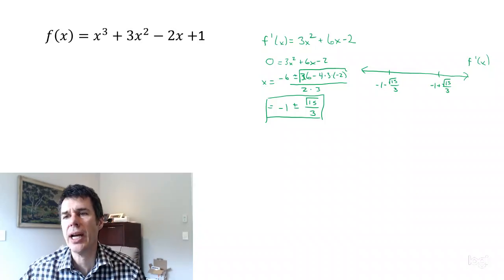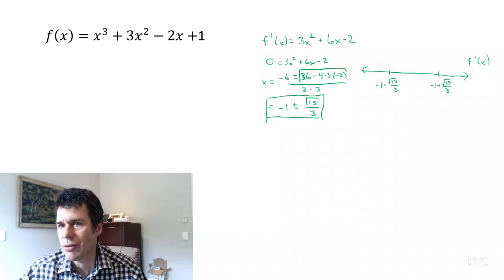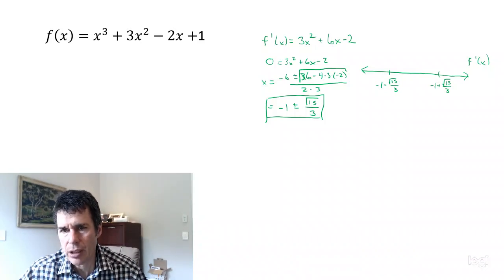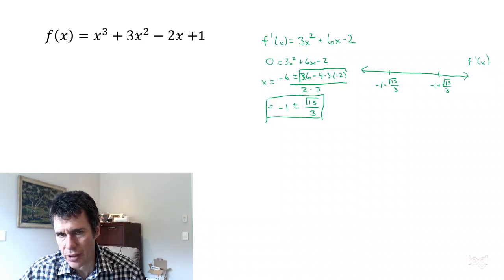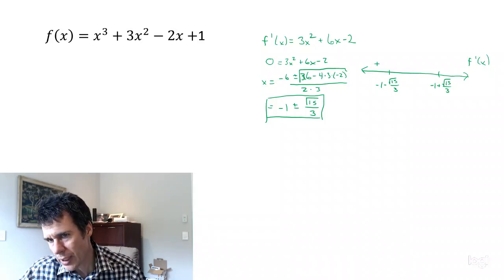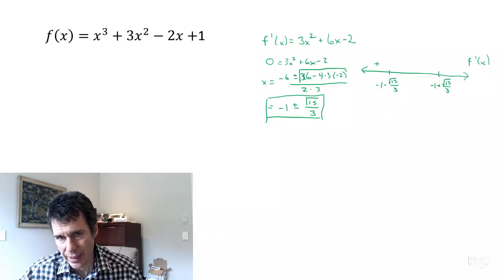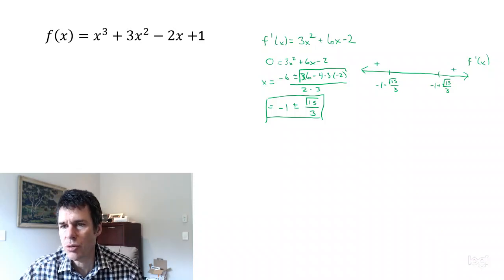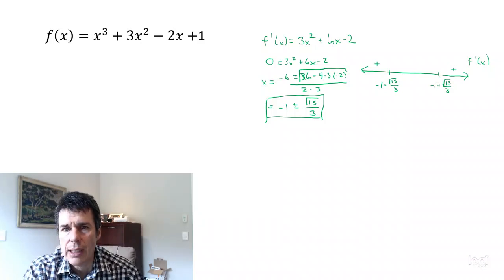Now we need to check when the first derivative is positive or negative across our three regions. For a very large negative number, the first term dominates — the x squared term — and it's positive, so we have a positive value in that region. For a very large positive number in the region to the right, again the x squared term dominates and it's positive. In the middle region, I'll plug in 0, and we get a negative number, so it's negative there.